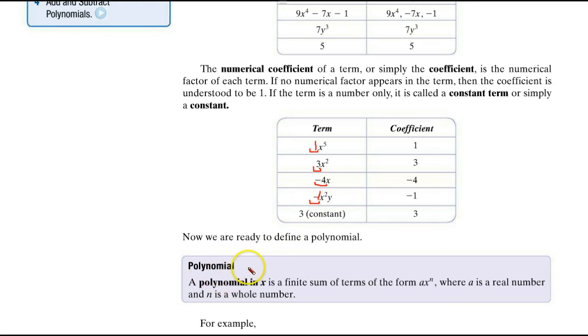Now, polynomial. By definition, a polynomial in x is a finite sum of terms of the form ax to the nth, where a is a real number, and n is a whole number. From chapter 1, the whole numbers were 0, 1, 2, 3, and our ellipsis, indicating it goes on. Do you see any negative numbers here? No.